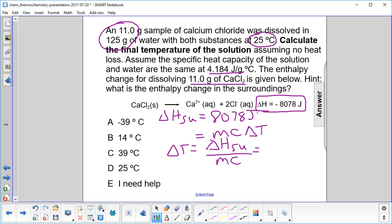So now we plug our numbers in. We have positive 8078 divided by the mass. Use the total mass, 11 plus 125, that's 136.